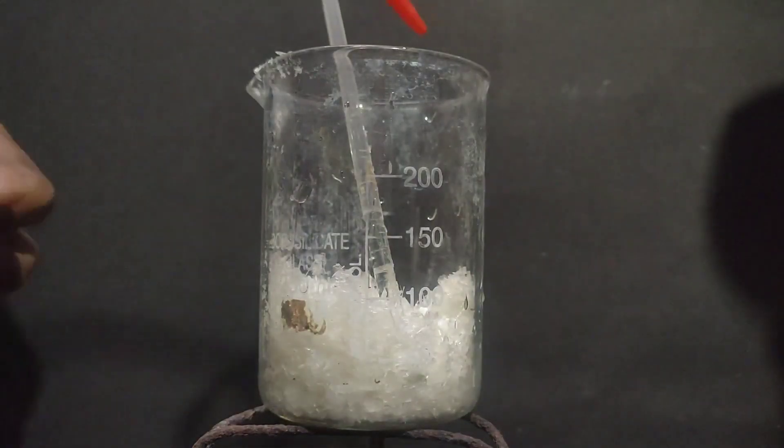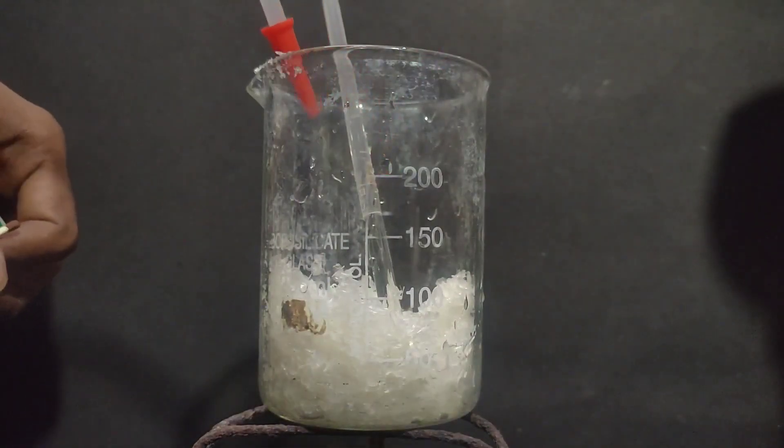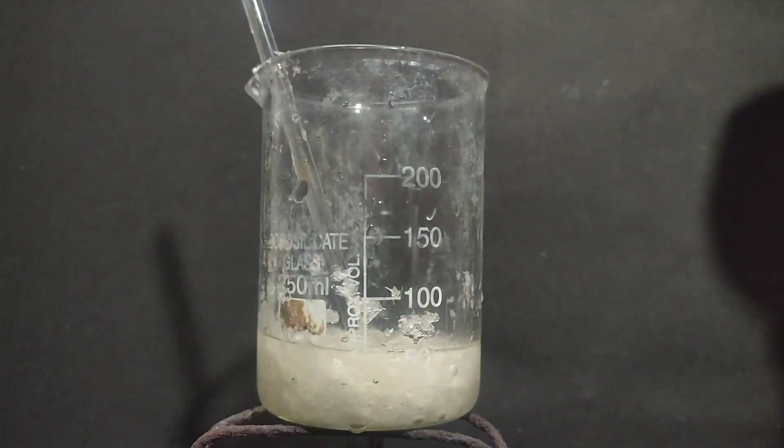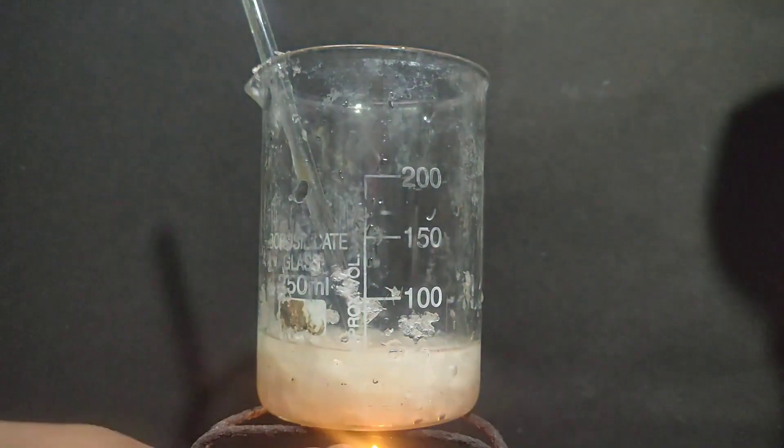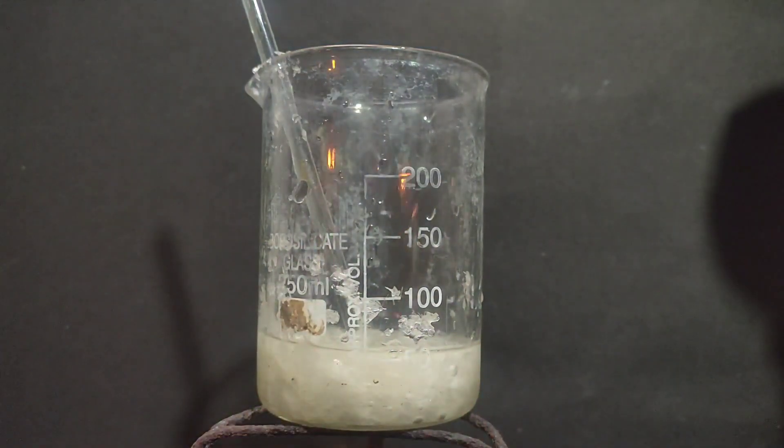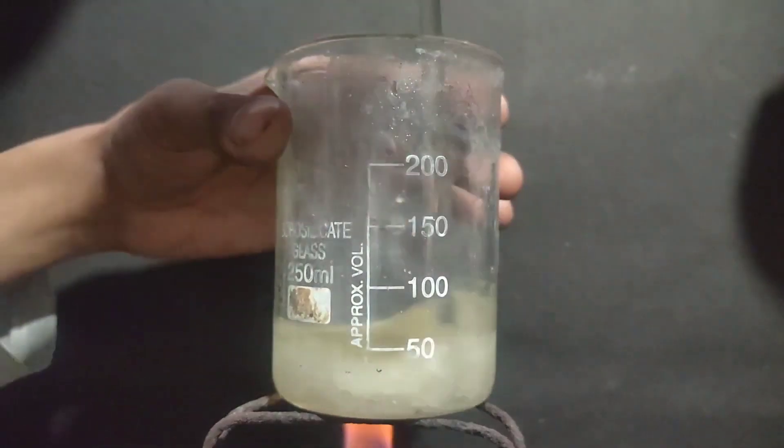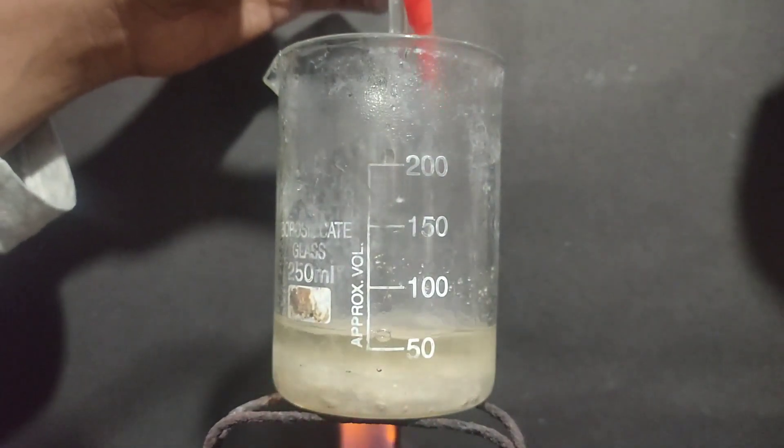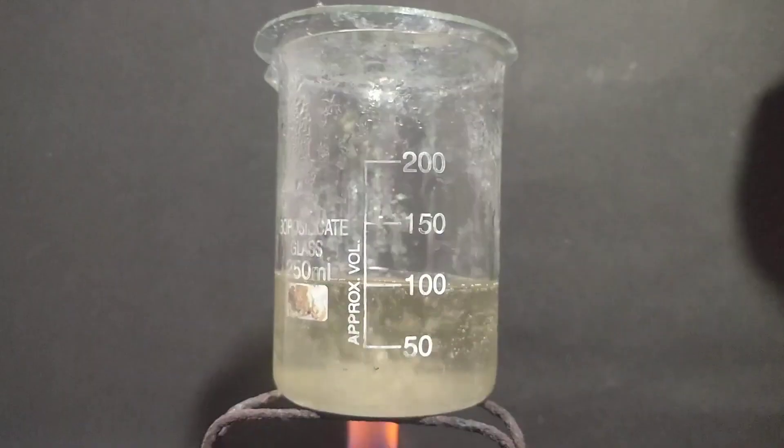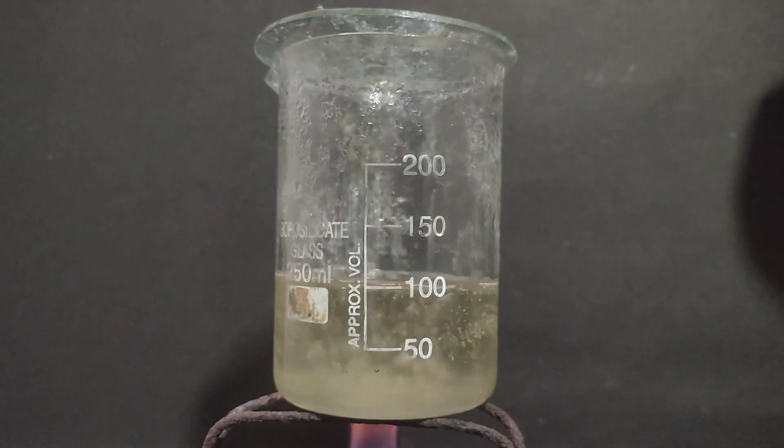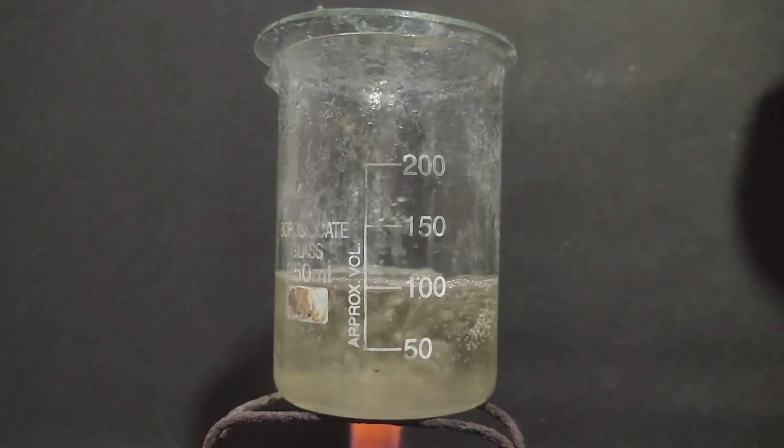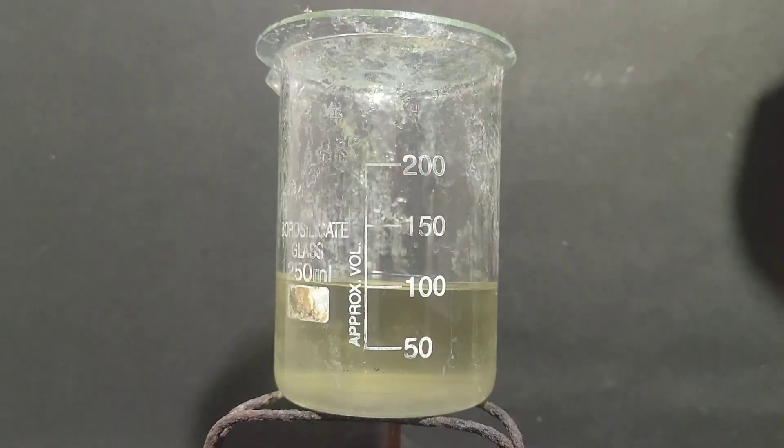Then I set the beaker on a tripod and added around 50 ml of distilled water initially, then started heating this. I kept adding distilled water until the precipitate completely dissolved. I added a total of 100 ml distilled water and now the crystals have completely dissolved. Now I let the solution cool.